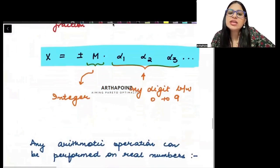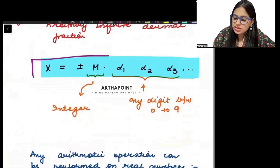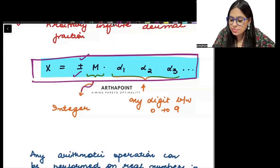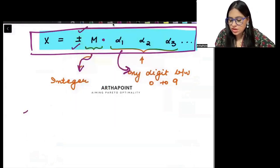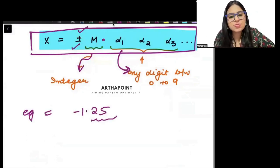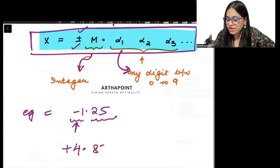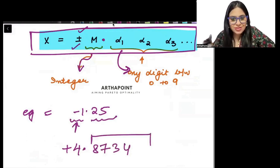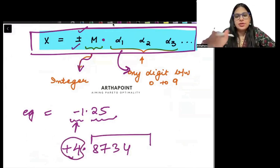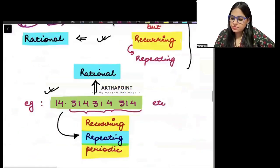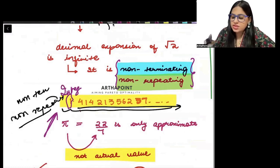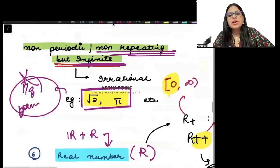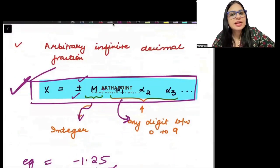Any real number can be represented in the form of plus or minus some integer with a decimal point and some digits between 0 to 9. For example, minus 1.25 — digits between 0 to 9 with integer minus 1. Or plus 4.8734. Even root 2, when expanded, has an integer part and digits between 0 to 9. So any real number, rational or irrational, can definitely be written in this format.